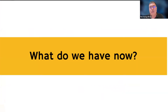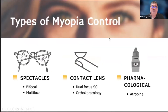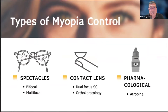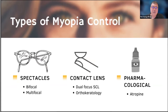What options do we have now? They are divided into three main categories. There is also a lifestyle element we will touch on later. The easiest would be spectacle lenses in the form of bifocal or multifocal. The second type is contact lenses — either soft contact lenses or via orthokeratology. And lastly, pharmacological intervention in the form of atropine or Myopine.